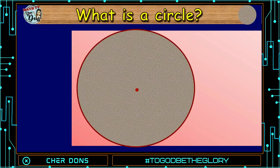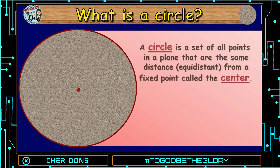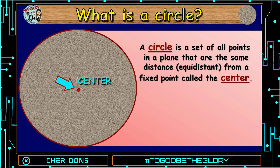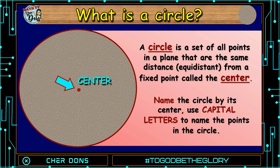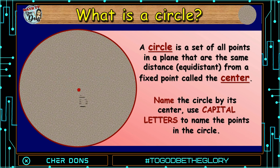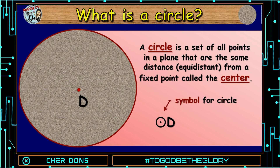What is a circle? A circle is a set of all points in a plane that are the same distance, or equidistant, from a fixed point called the center. A circle has one and only one center. We can name the circle by its center using capital letters. This is the symbol for circle, and this one is circle D.